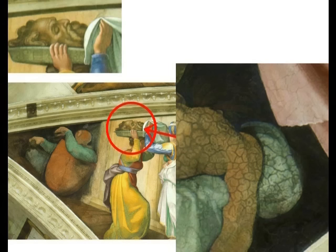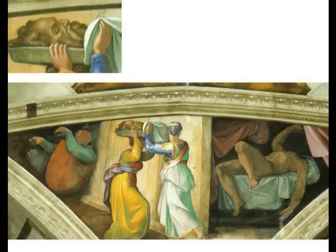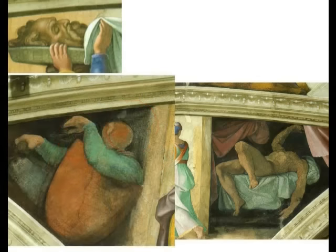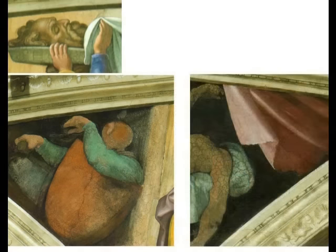向かって右側のベッドの上に横たわっているのがヨハネの死体と言われています。そして二人の人物が中央で運んでいるのがヨハネの首と一般には説明されています。しかしこの首は向かって右側の人物の首ではありません。向かって左側の人物の首、つまり替え玉の首ということになります。まずこの絵の、この首に注目してください。